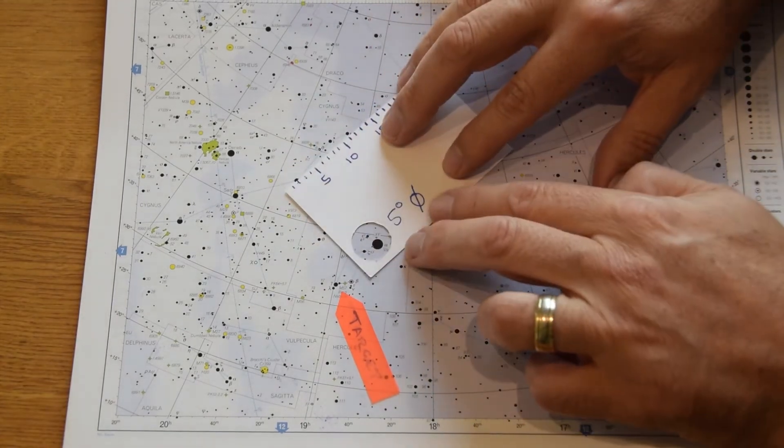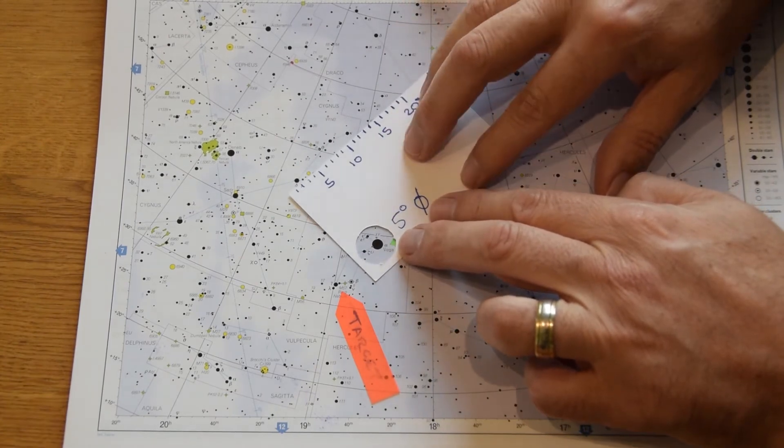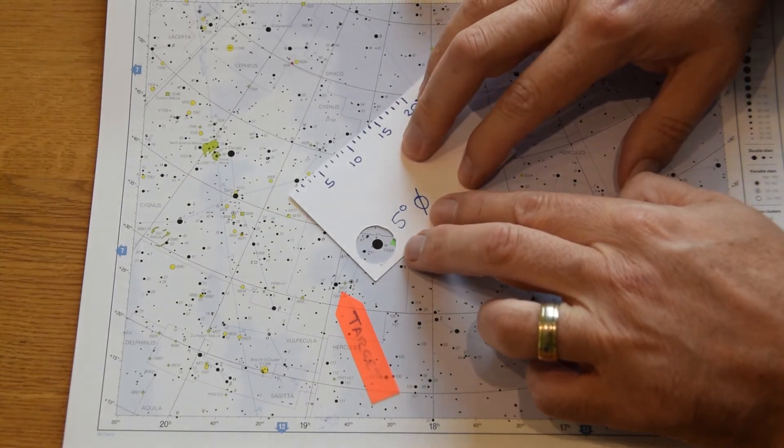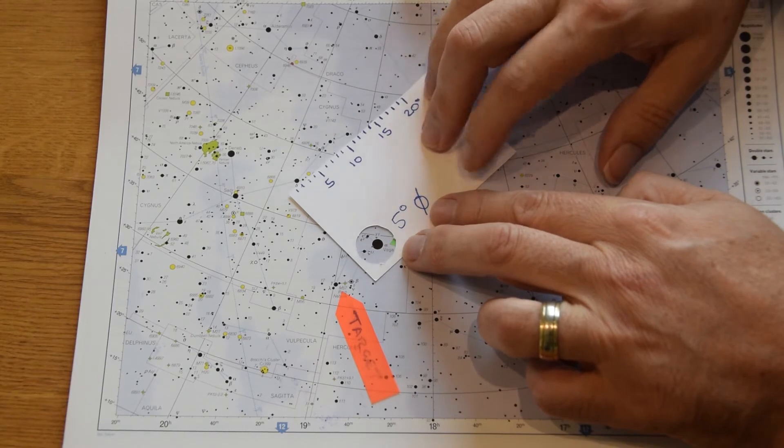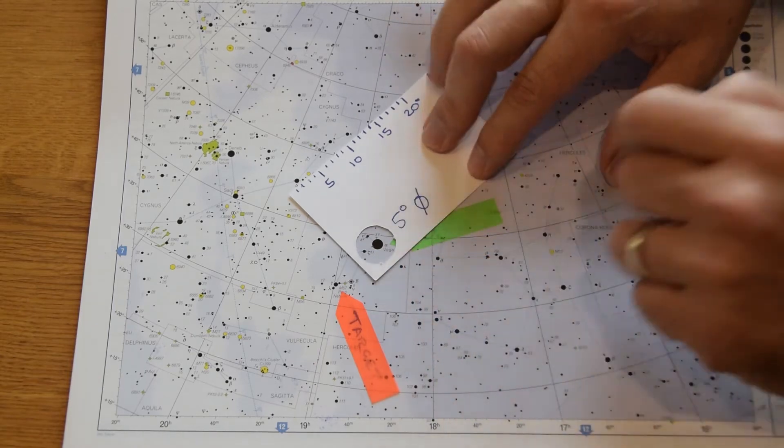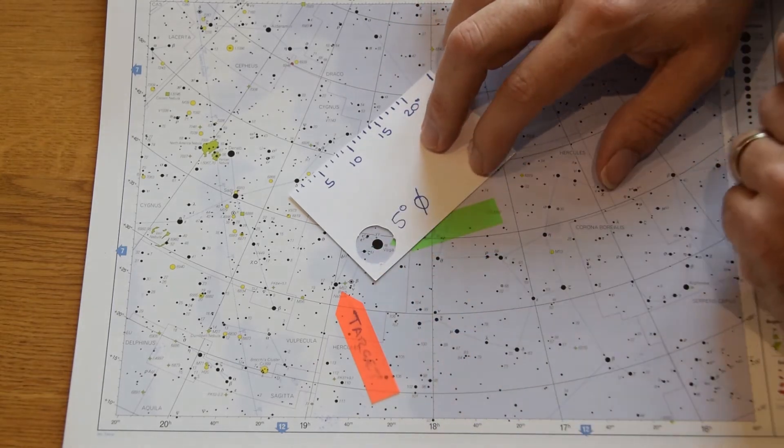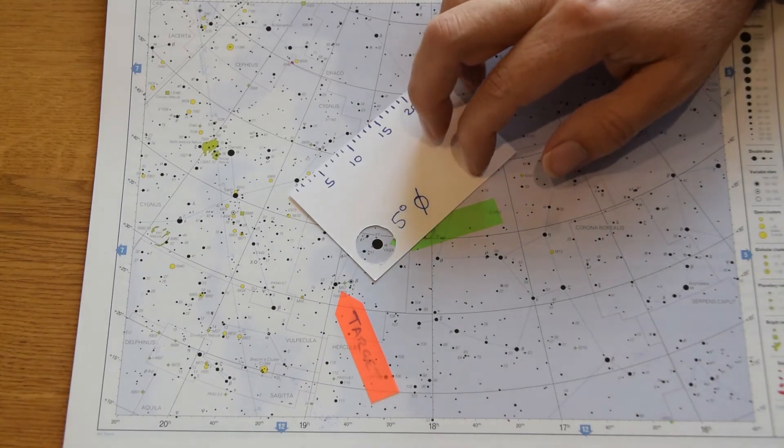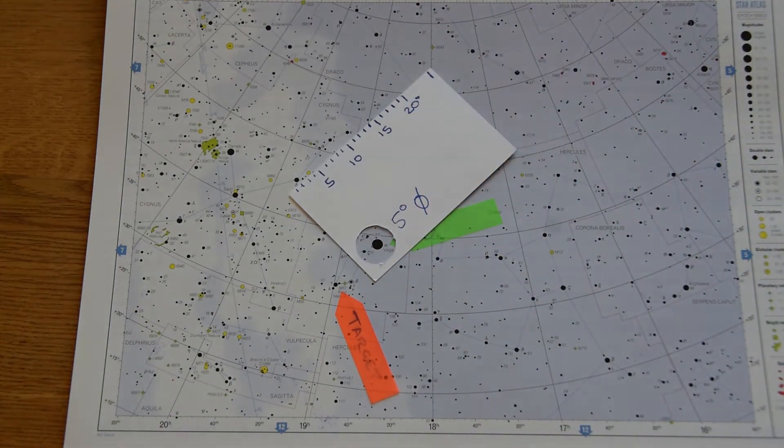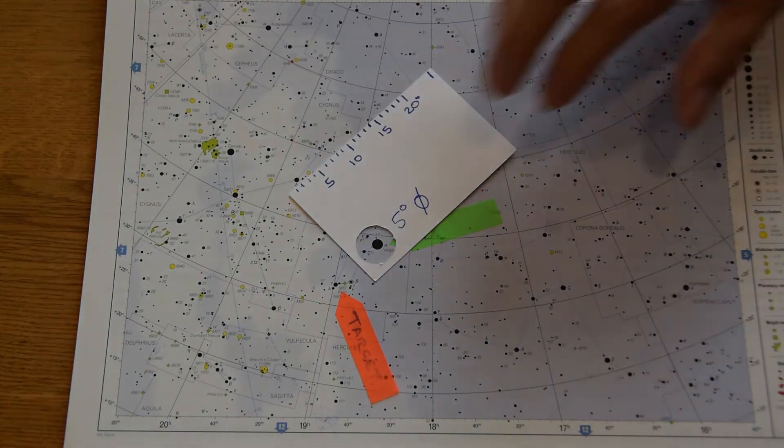Put our finderscope over the top of Vega first of all. And before we go too far I want to show you something first of all. And that's this star up here, Epsilon. Epsilon Lyrae is actually also known as the double double.